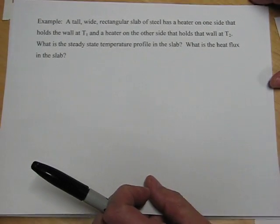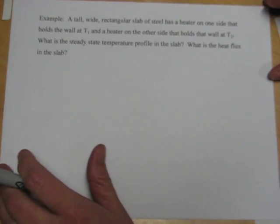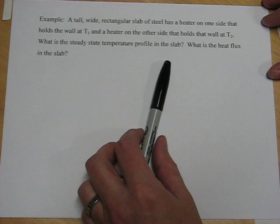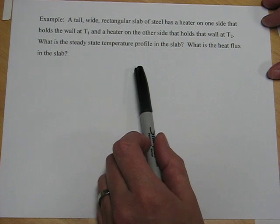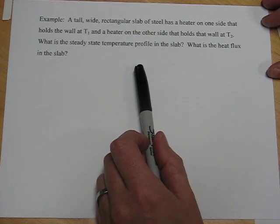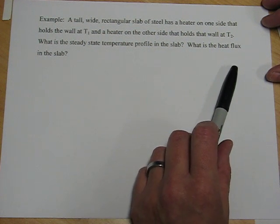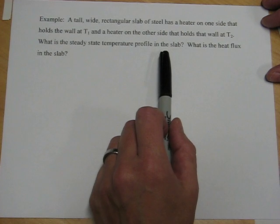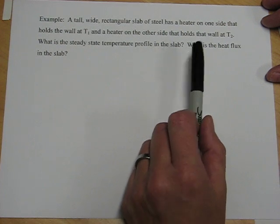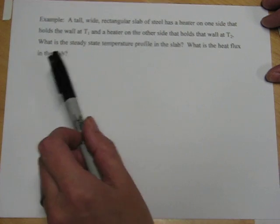The problem is a tall, wide, rectangular slab of steel has a heater on one side that holds the wall at T1 and a heater on the other side that holds that wall at T2. What is the steady state temperature profile in the slab? What is the heat flux in the slab?